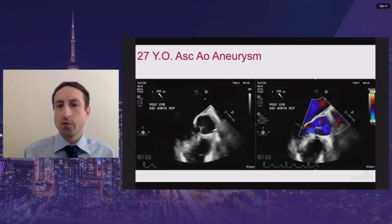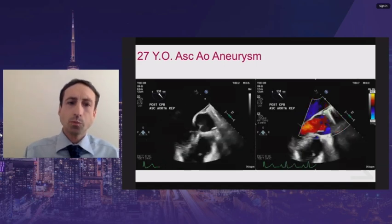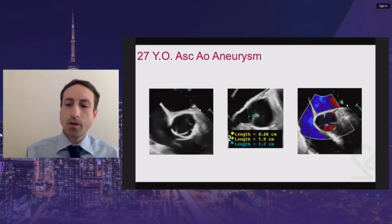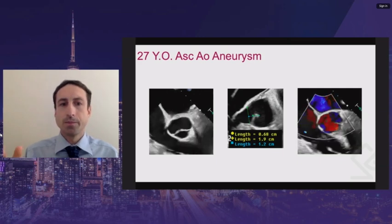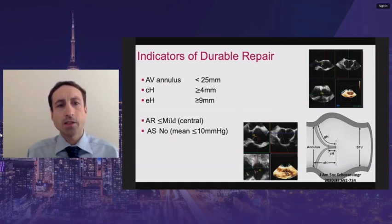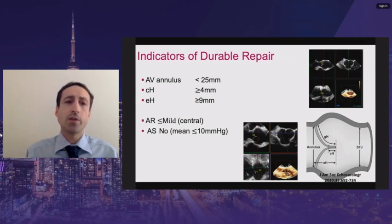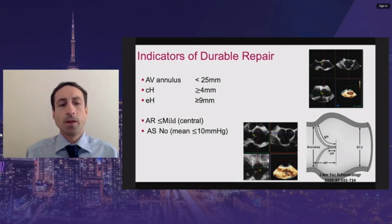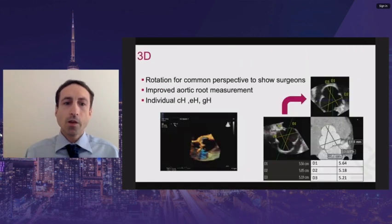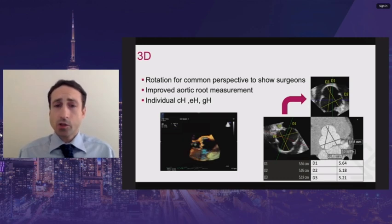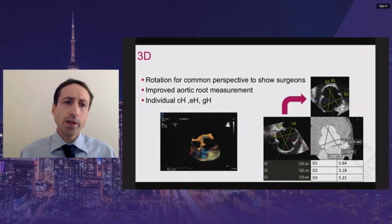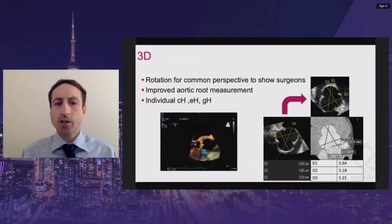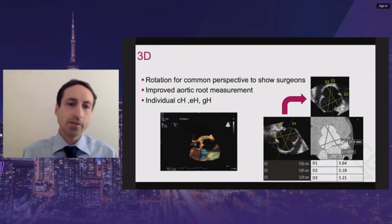This patient had an ascending aorta replacement. Following the repair, there was trivial aortic regurgitation, a good coaptation length, and effective height suggesting a durable repair. Indicators of a durable repair include an aortic valve annulus less than 25 millimeters, coaptation height of at least 4 millimeters, effective height of at least 9 millimeters, no or at most mild central aortic regurgitation, and no aortic stenosis. 3D imaging is very important for these cases — it allows rotation to show surgeons a common perspective, improves aortic root measurements, is the only way to obtain individual coaptation heights, effective heights, and geometric heights, and allows understanding of complex anatomy such as large sinus of Valsalva aneurysms. Here we can see root measurements matching the preoperative CT to within one millimeter.